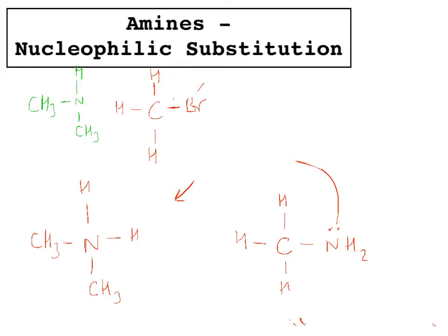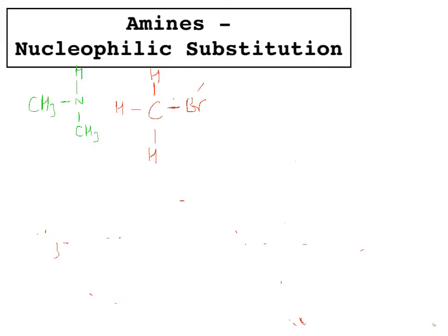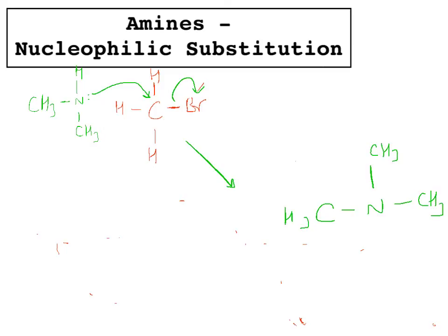That secondary amine can then attack this bromomethane again and create a tertiary amine. That N still has a lone pair; it can again attack this carbon atom, the bromine leaves again, and what you create is a nitrogen attached to three methyl groups and the H that was originally attached to it. It's positively charged because it's making more bonds than it wants to, and then that positive charge is quenched, and you create your tertiary amine.